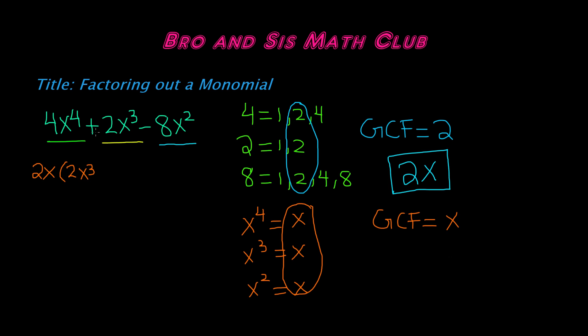And now we have a positive sign. So we have positive 2x cubed divided by 2x. So positive divided by positive is going to be positive. 2 divided by 2 is 1. Now we don't really need to write 1, but just if you need to, then you can always write 1.